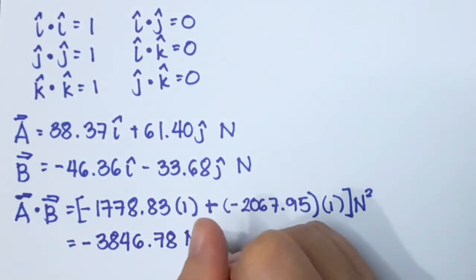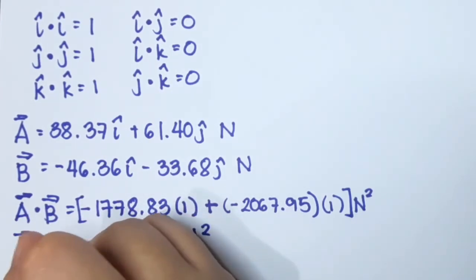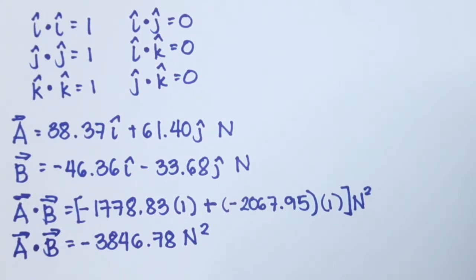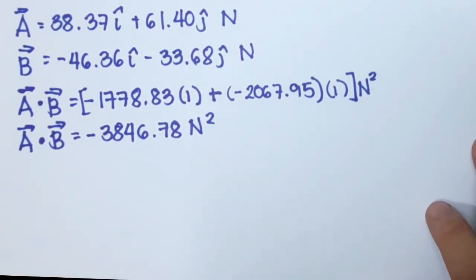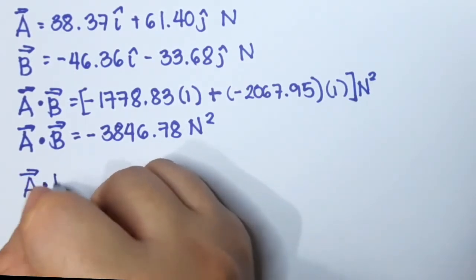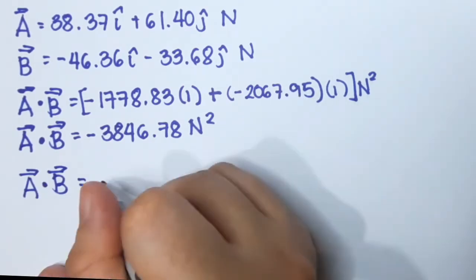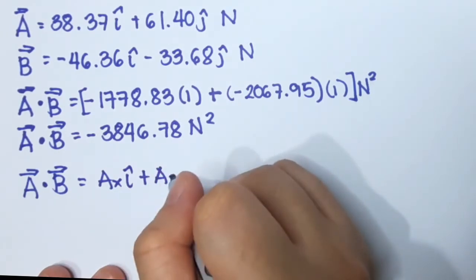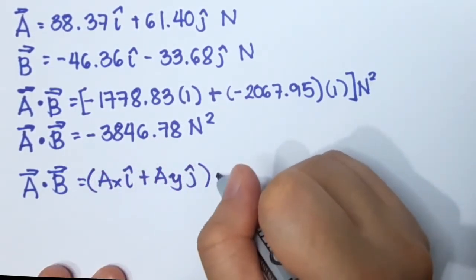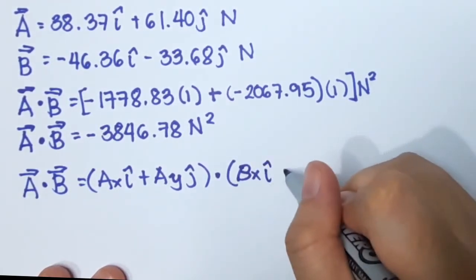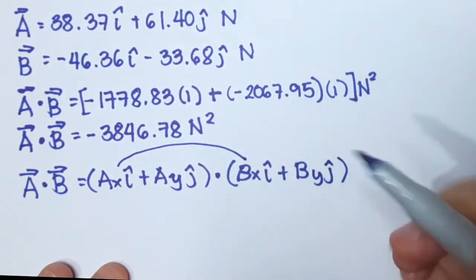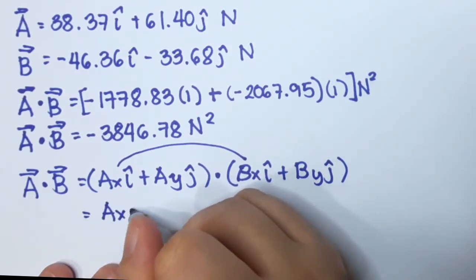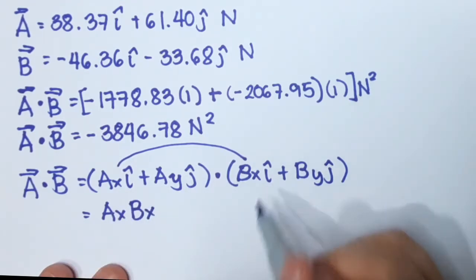The answer is negative 3846.78 newton squared. That is the magnitude of a dot b — a scalar with no direction. So from this example you can see that if we multiply a dot b, the answer is just a magnitude without any direction. Now for the general form: a dot b is ax i-hat plus ay j-hat, dotted with bx i-hat plus by j-hat. Multiplying gives ax times bx, and since i dot i equals one, that term is kept.